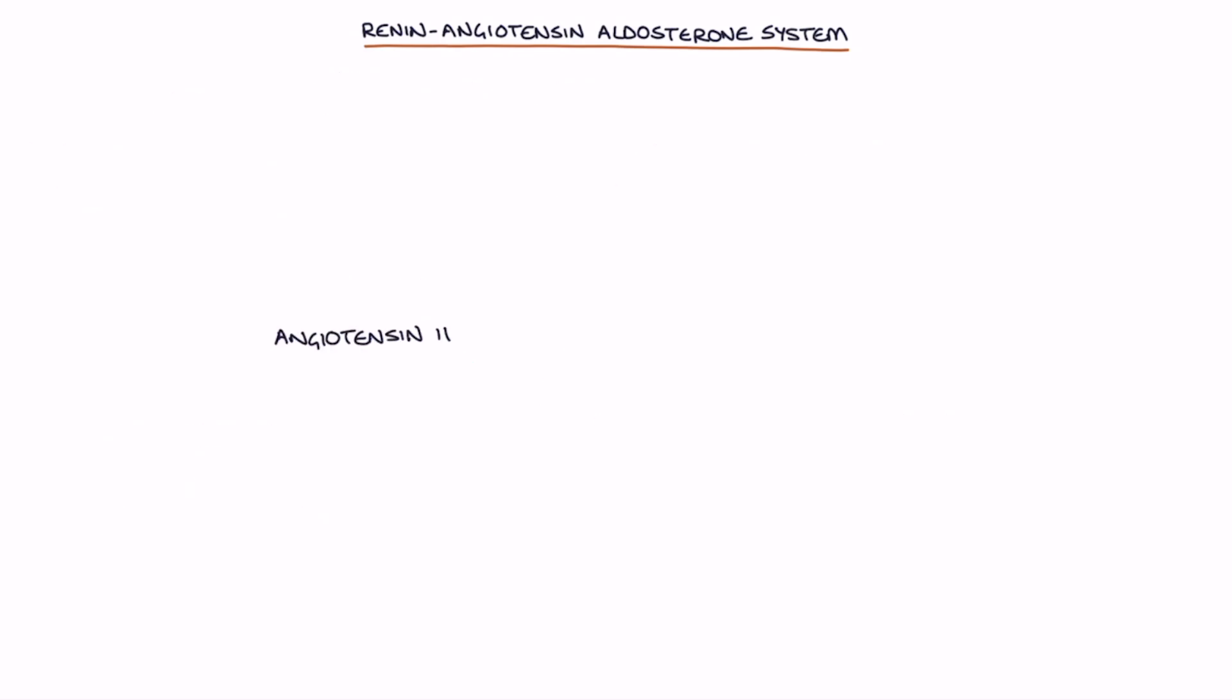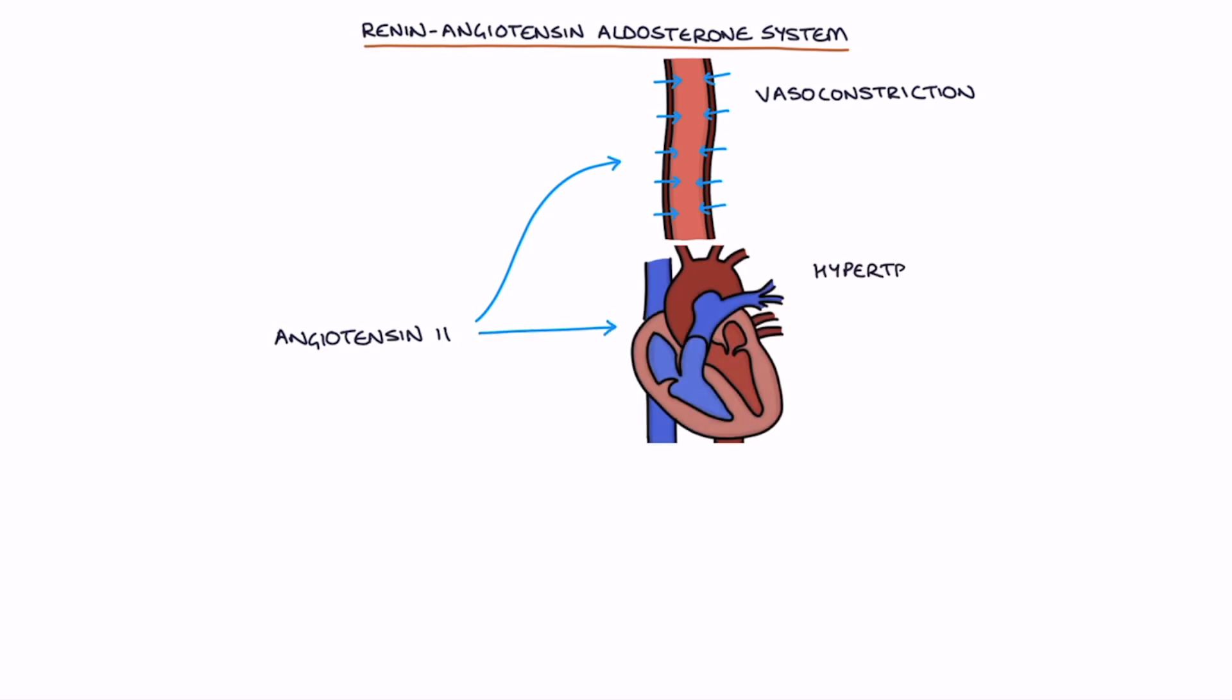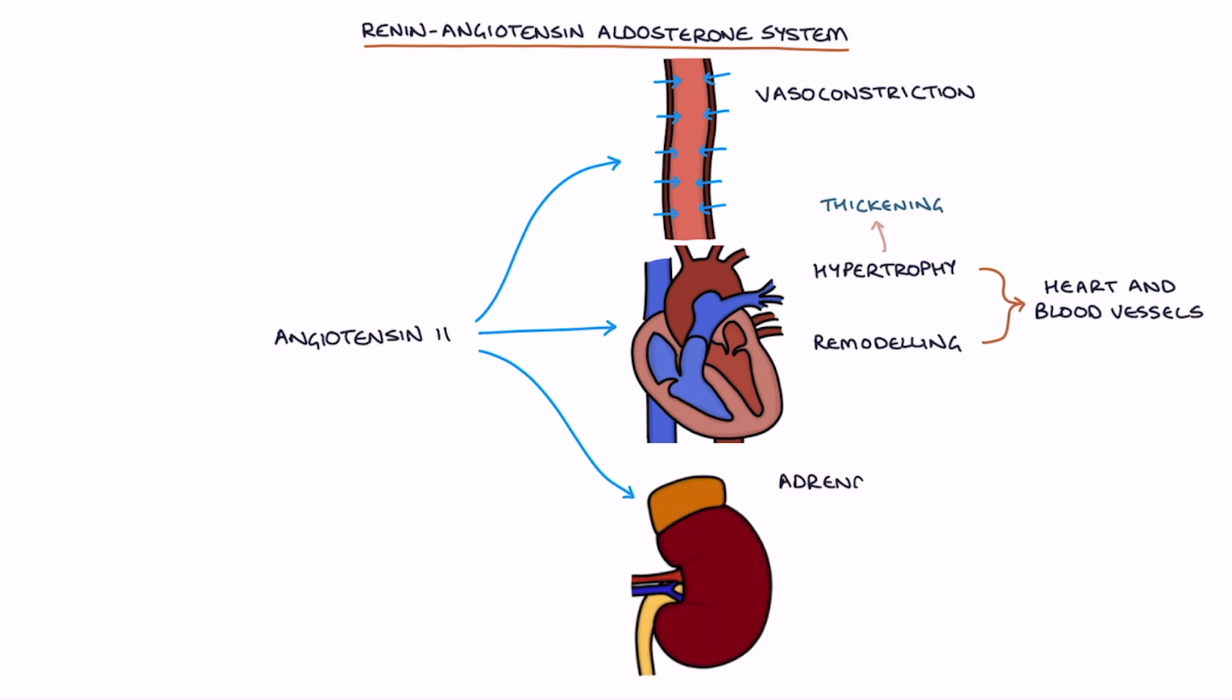Angiotensin 2 has three main effects. It stimulates vasoconstriction acting directly on the blood vessels to cause them to constrict, hypertrophy or thickening and remodeling of the heart and the blood vessels, and it stimulates the adrenal glands to release aldosterone.